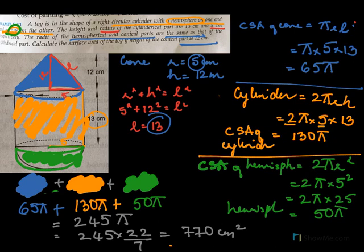To recap: the CSA of the cone is πrl, of the cylinder is 2πrh, and of the hemisphere is 2πr². Add all three formulas to get the total surface area of the toy.